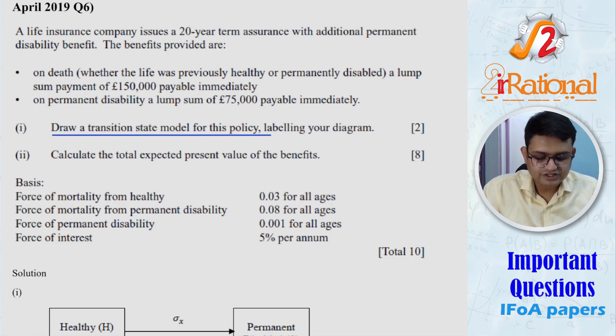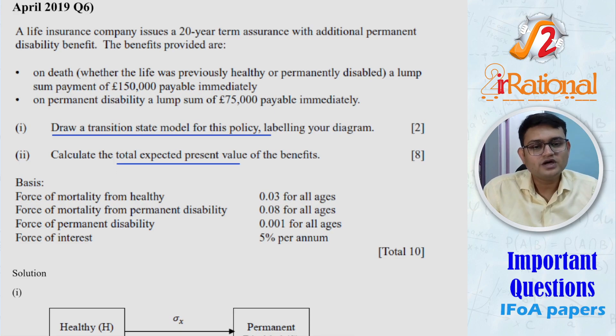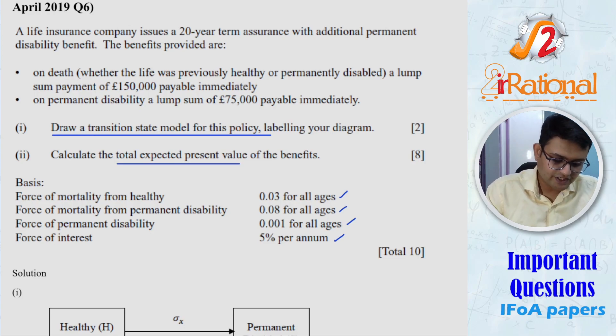So let's see what is different in this question. We have a life insurance company issues a 20 year term assurance with additional permanent disability benefit. The benefits provided are: on death, whether the life was previously healthy or permanently disabled, a lump sum payment of 150,000 payable immediately. On permanent disability, a lump sum of 75,000 payable immediately. And in the second part, they are asking us to calculate the total expected present value of the benefit. All the forces are constant for all ages and our force of interest is also constant throughout the time period.